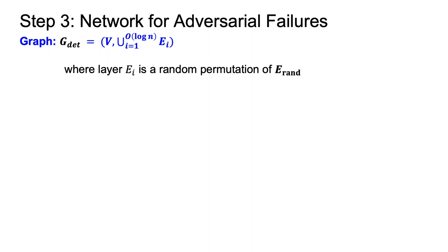Now to the step that we've all been waiting for, where we will construct a log degree graph that is resilient to linearly many adversarial failures. The new graph is constructed with O of log n layers of edges, where each layer EI is identical to our previous set of edges ERAND, with the vertex names permuted randomly. The protocol is also extremely simple. The sending node sends via PI RAND on each of the layers, and then the receiving node takes a majority.